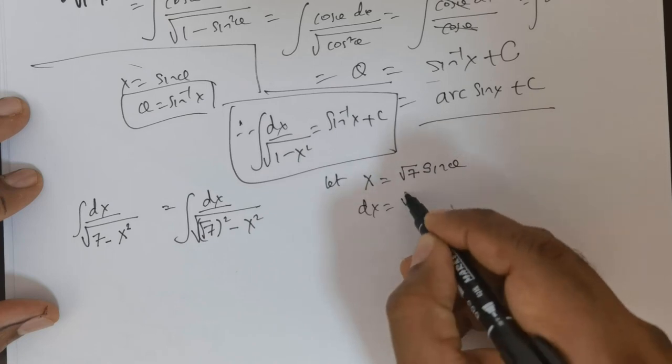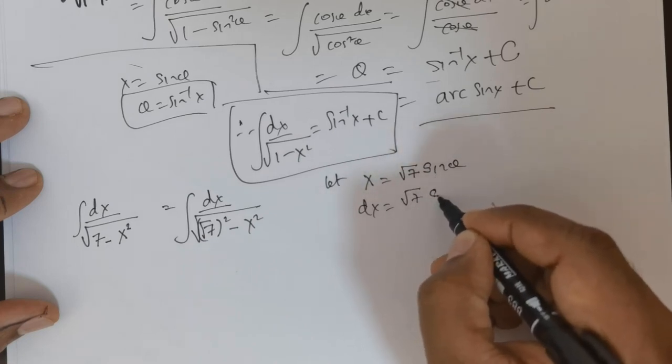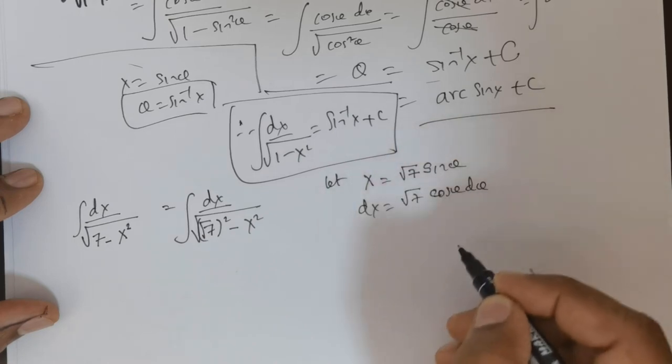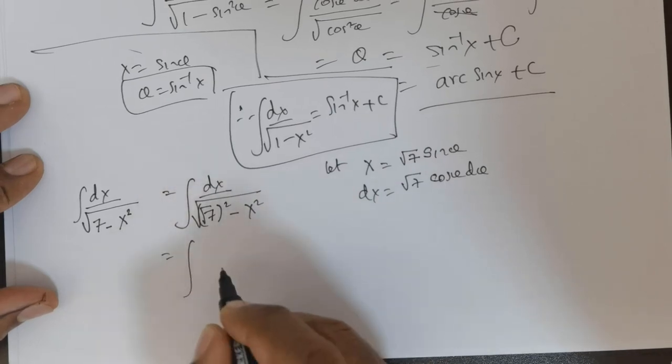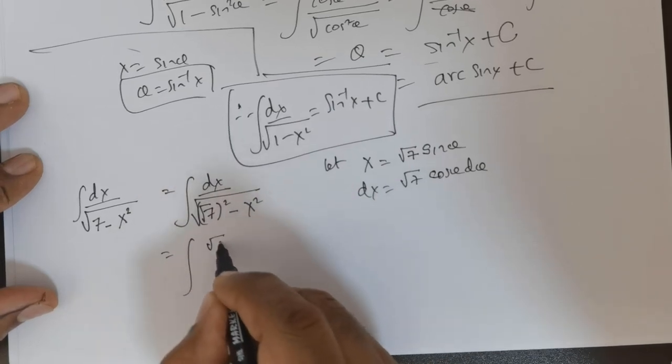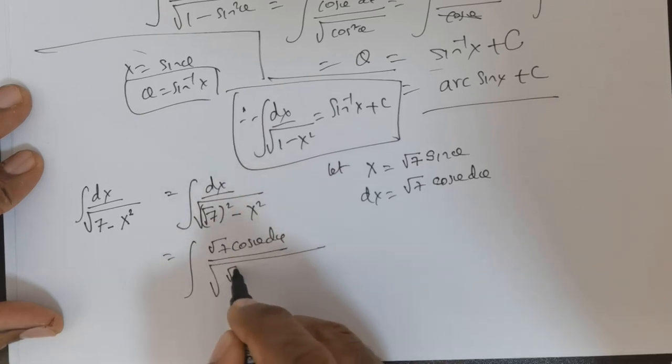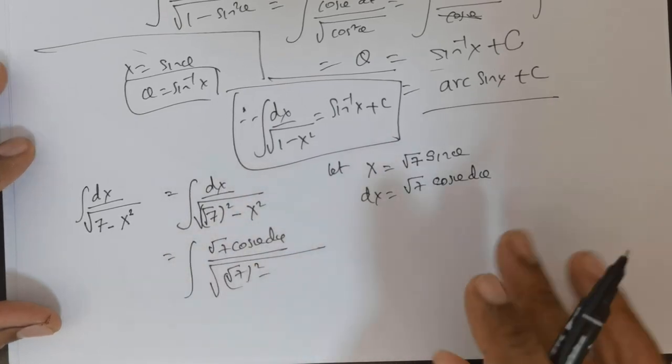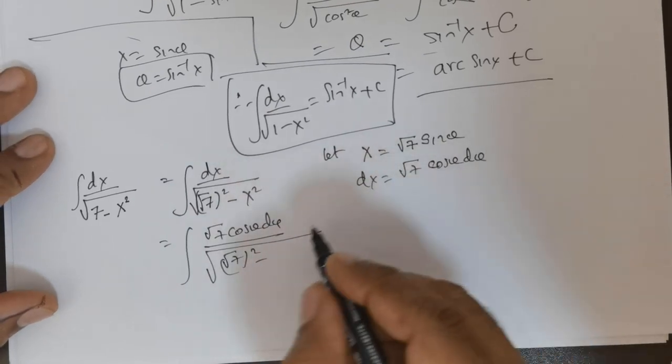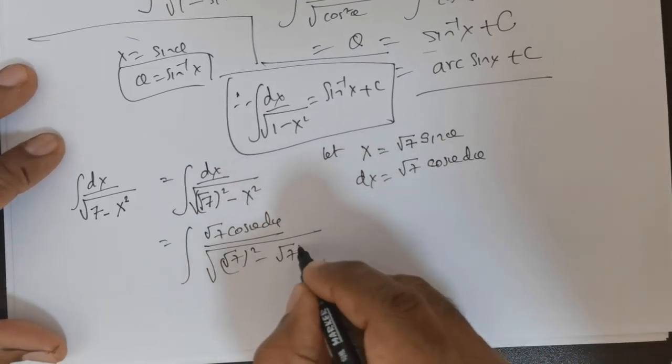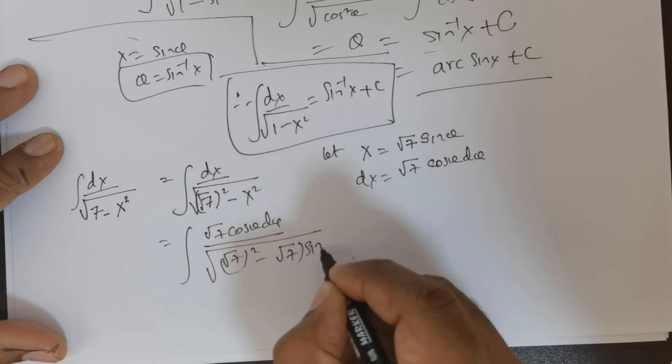Now if you were to differentiate this, this is going to be root 7 times cos theta d theta, since the differential of sin theta is cos theta. So this is rewritten as: in place of dx, we substitute root 7 times cos theta d theta divided by the square root of root 7 squared minus, in place of x, root 7 sin theta, and that's squared.